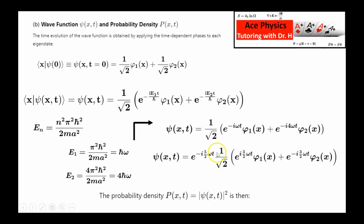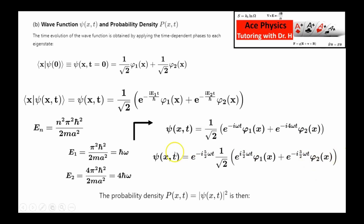It's useful to factor out an overall phase so the arguments of the exponentials have the same magnitude. To simplify the mathematics, I factor out e to the minus i 5/2 omega t, which gives that phase factor times 1 over root 2 times e to the i 3/2 omega t times phi1, plus e to the minus i 3/2 omega t times phi2. This is our wave function psi of x and t for any time — and this is the general procedure to find the wave function at any time for any quantum mechanics problem.